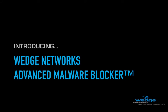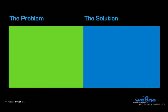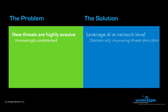Allow me to introduce you to an exciting new product by Wedge Networks called the Advanced Malware Blocker, or Wedge AMB. Enterprises today are faced with multiple critical challenges which Wedge AMB addresses. The first problem is the ugly truth that new advanced threats can routinely evade detection by existing security systems. Wedge AMB solves this by introducing artificial intelligence at the network layer, working in concert with multiple other technologies to dramatically improve real-time threat detection and prevention.